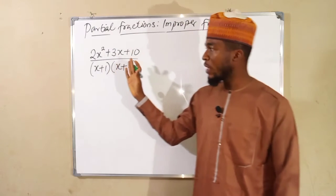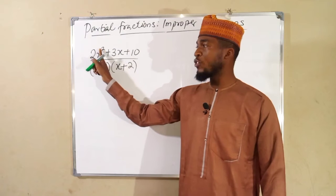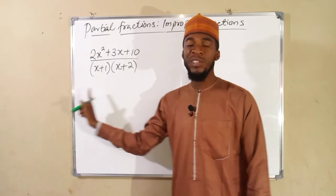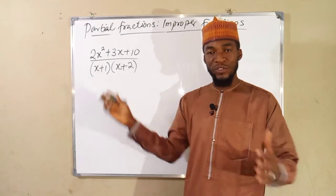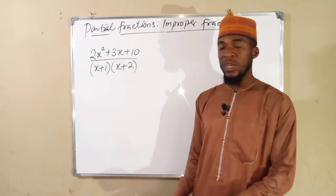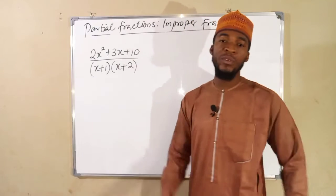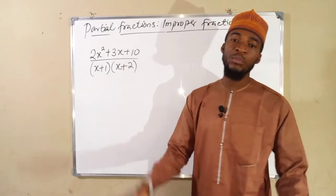You can see the expression given to us here. The degree of the top is 2. Likewise, the degree of the bottom is also 2 because this is 1 and this is also 1. If you join them together, you have 2. So first of all, let me show you how to break this down before we carry out our simplification.